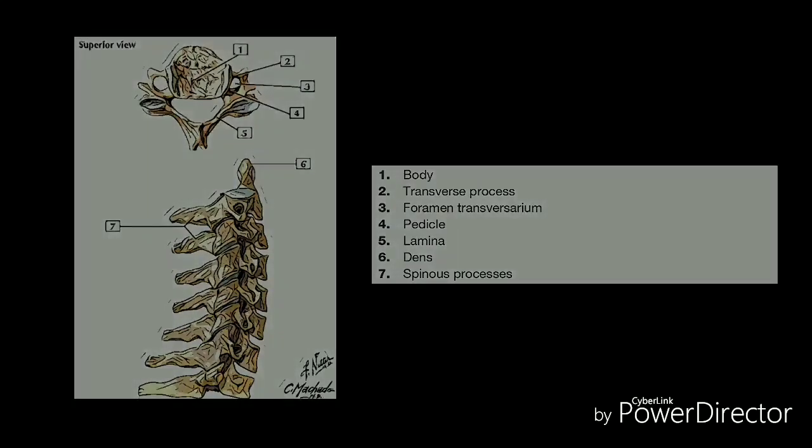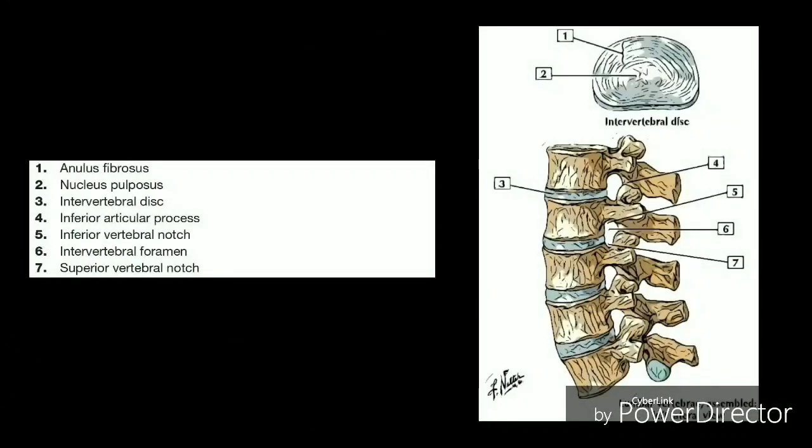Each vertebra in your spine is separated and cushioned by an intervertebral disc, which keeps the bones from rubbing together. Discs are designed like a radial car tire. The outer ring, called the annulus, has crisscrossing fibrous bands much like a tire tread. These bands attach between the bodies of each vertebra.